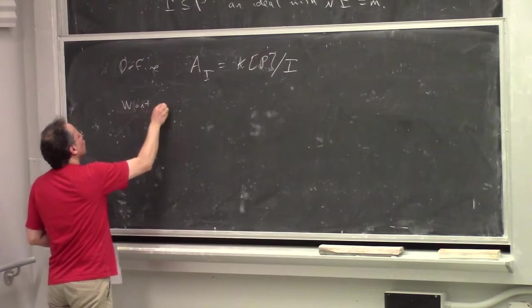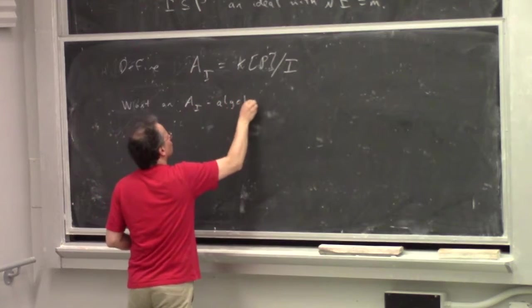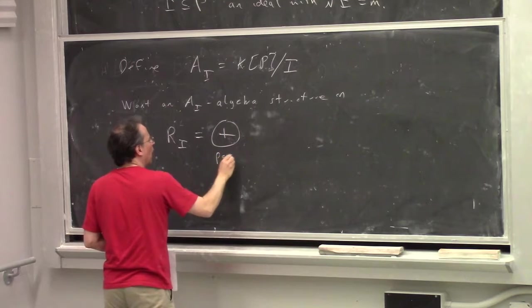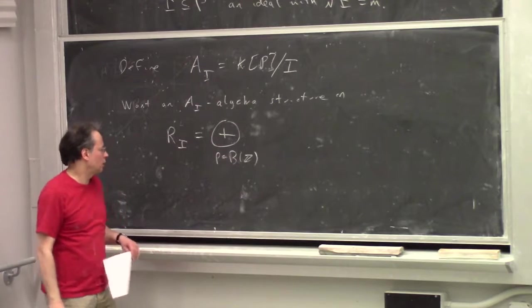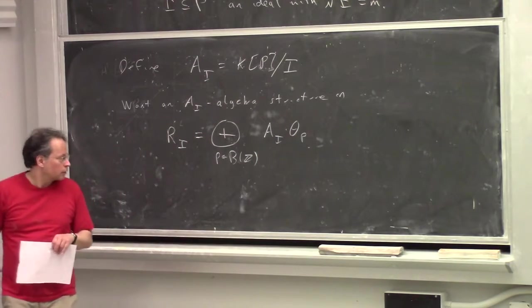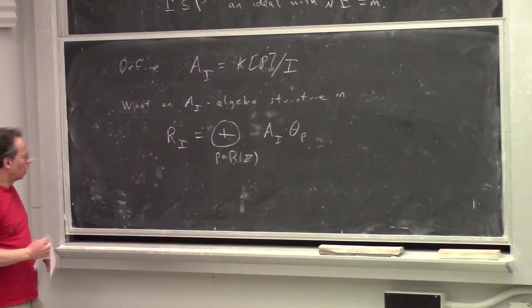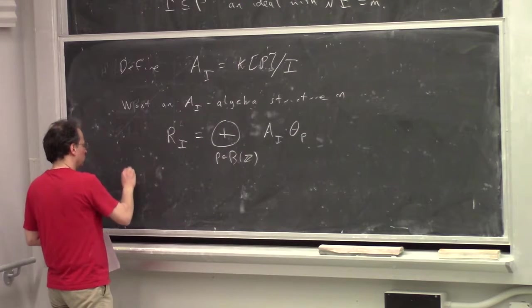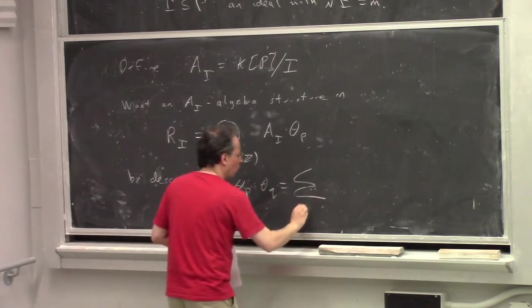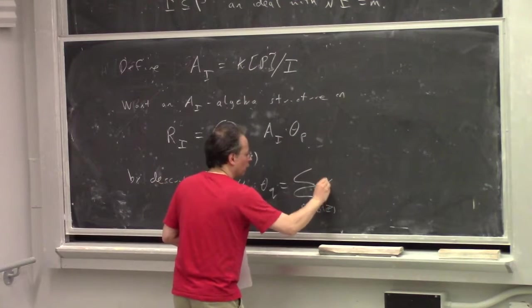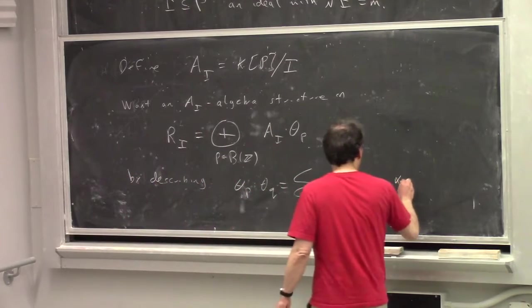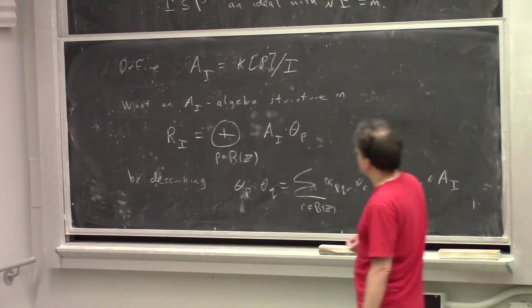So then we're going to define - I want an A_I algebra structure on R_I, which is the free A_I module generated by the points of B of Z. So the sum over all p in B of Z of A_I times a symbol theta_p, thinking of those as our theta functions. So in particular, we need to describe some structure coefficients.